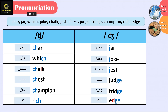Listen and check: char, witch, chalk, chest, champion, rich. J: jar, joke, jest, judge, fridge, edge.